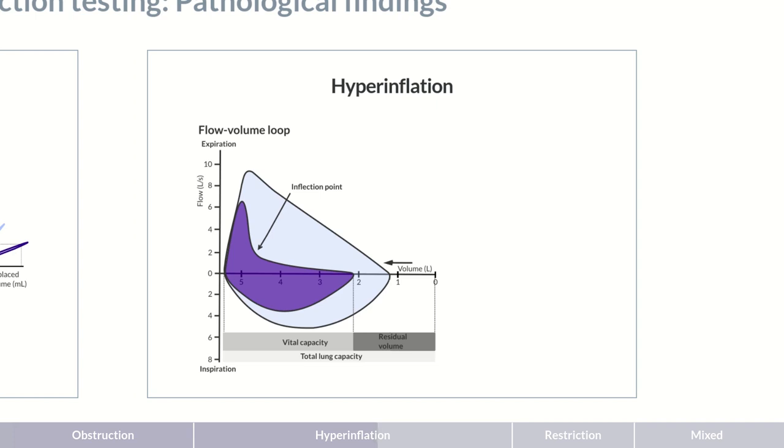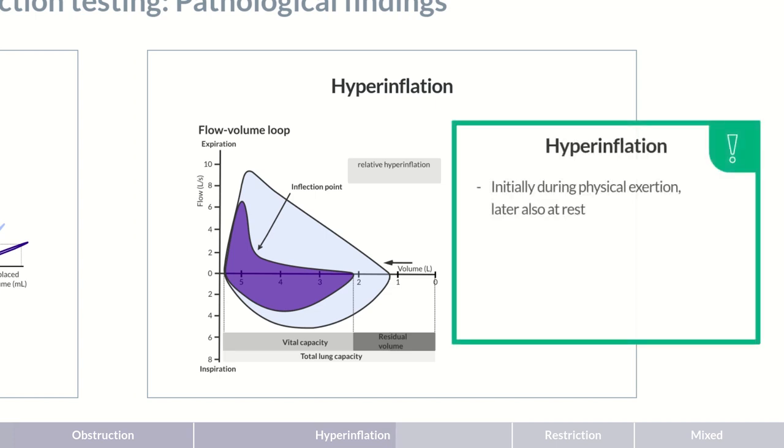If the total lung capacity remains normal, this is known as relative hyperinflation. Here, as we've described, bronchial collapse occurs during expiration and the time to expire is shortened. So more air remains in the lungs than usual, and they become hyperinflated. Hyperinflation initially occurs only during physical exertion, but later also at rest.